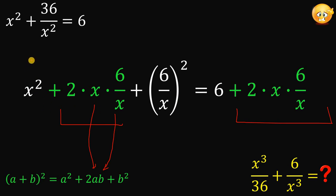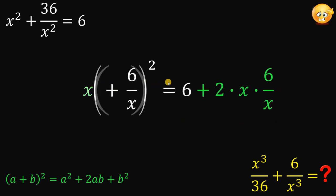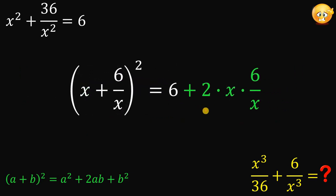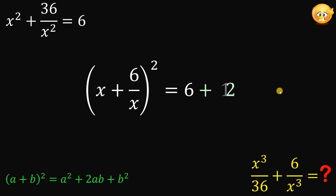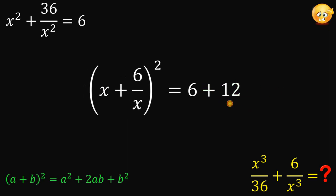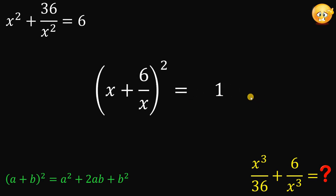We can now rewrite the left-hand side as x plus 6 over x, raised to the power of 2. On the right-hand side, the x's cancel out, so this is just 2 times 6, which equals 12. Therefore, 6 plus 12 equals 18.